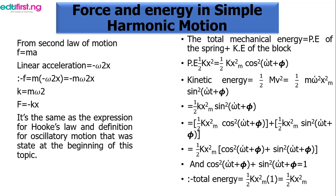So if we input that into the formula, our F equals m times minus omega squared x. And m omega squared is the same as k, which is the spring constant. So inputting the spring constant into the formula, our F equals minus kx.